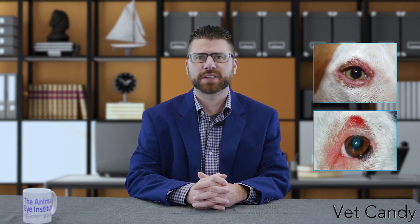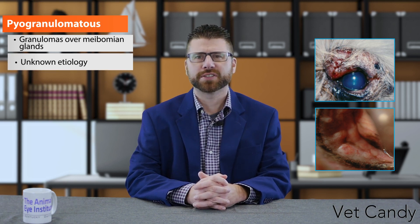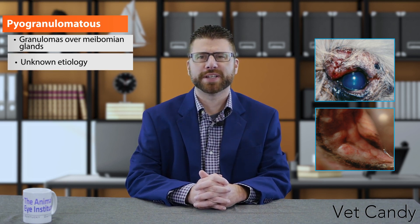Viral blepharitis is most common in cats with feline herpes virus developing blepharoconjunctivitis. Here are two pictures of parasitic blepharitis, both caused by Demodex. Pyogranulomatous blepharitis involves distinct granulomas centered over meibomian glands. The etiology is not clearly understood but involves rupture of meibomian glands, autoimmune mechanisms, folliculitis, and a possible bacterial component. Common sequelae to blepharitis are ulceration, depigmentation, scarring, and necrosis in severe cases.